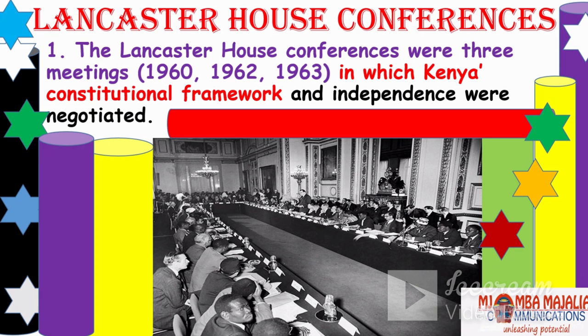How was the 1963 Constitution obtained? They were called Lancaster House Conferences. Kenya had three conferences. In the picture we have Kenyatta, Mboya, and some of the independence leaders including Shikuku and Mbiu. The first conference was in 1960, the second in 1962, the third in 1963, which got us the independence Constitution, promulgated on December 12, 1963.